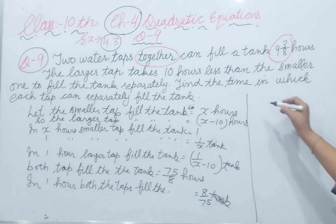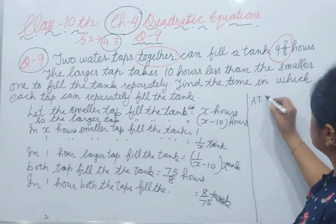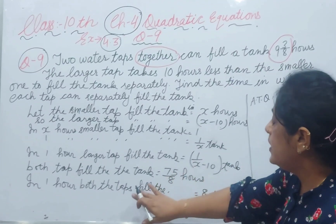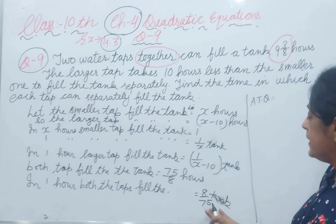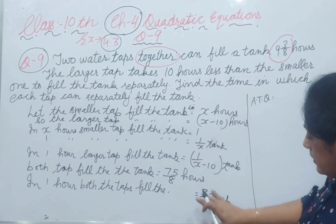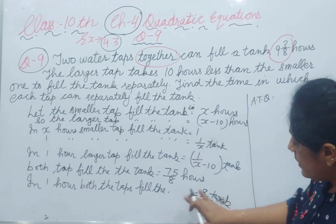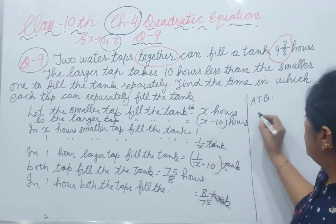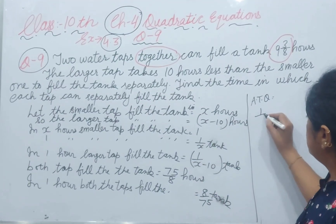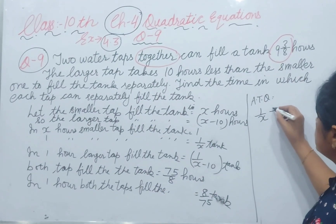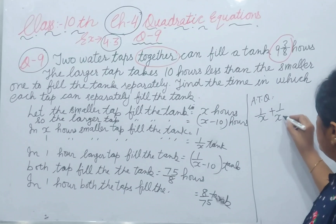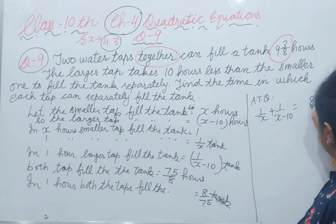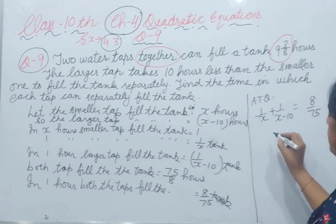According to the question, both taps fill the tank together. In 1 hour they fill 8/75 of the tank. So the equation is: 1/x plus 1/(x minus 10) equals 8/75.